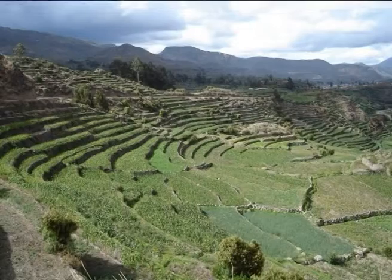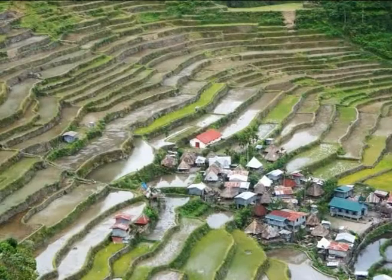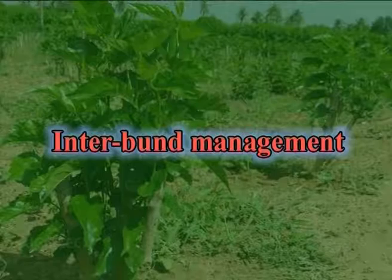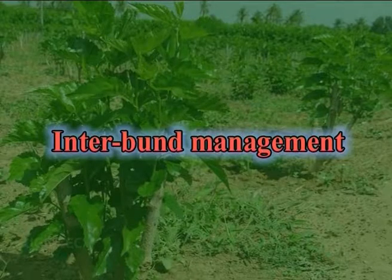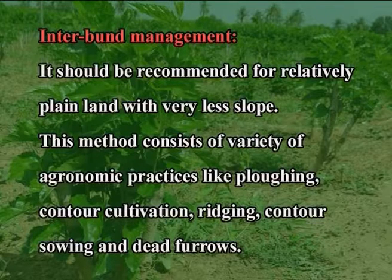Bench terracing can be recommended for deep soils on slopes between 8 to 35 percent. In this method, terraces are built along the slopes with wide bunds, and the bund soil is covered with perennial grasses, though this process is very expensive. Interbund management should be recommended for relatively plain land with very little slope, and consists of a variety of agronomic practices like plowing, contour cultivation, ridging, contour sowing and dead furrows.